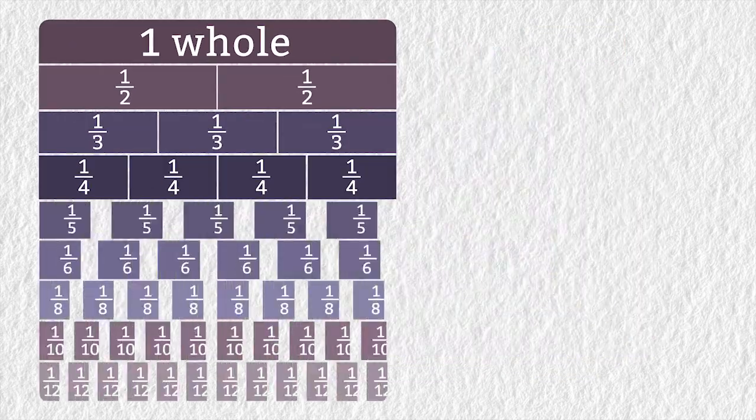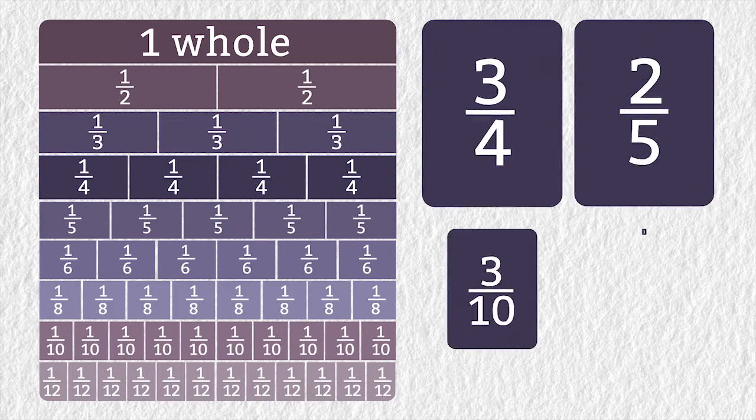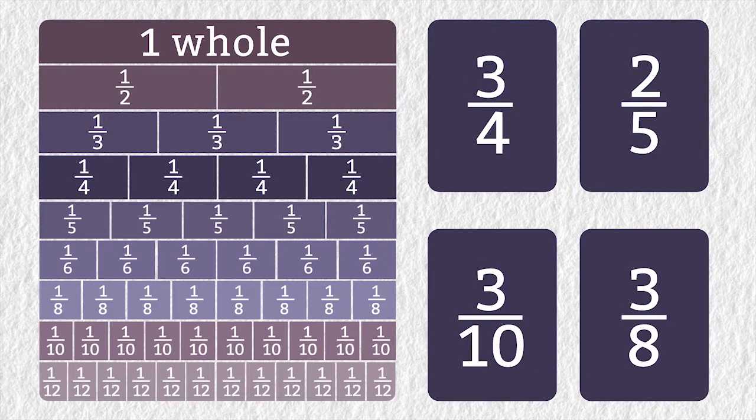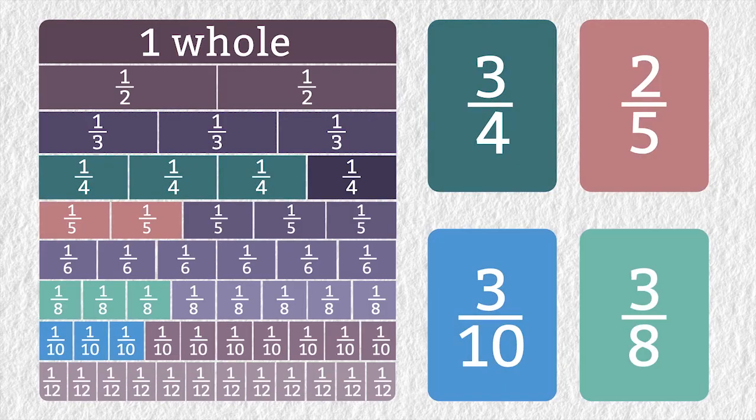Fraction strips can also help you put fractions in order. List these fractions from least to greatest: 3 fourths, 2 fifths, 3 tenths, and 3 eighths.